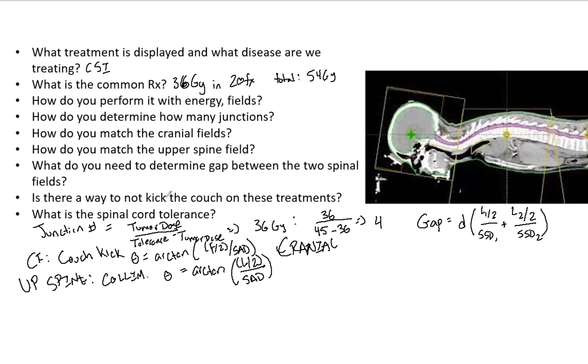Is there a way to not kick the couch on these treatments? Because once you start kicking couches, the planning can get pretty ugly—it could be easily missed, and these are just very complex cases. What you can do is do a prone setup, use a half beam block on the cranial field, and that eliminates the divergence.